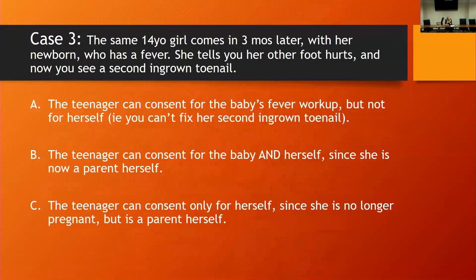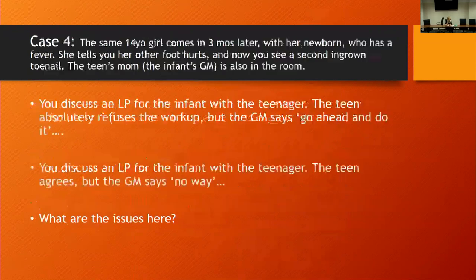Years ago they used to say if you were pregnant or had a baby, you were emancipated. You were no longer emancipated just because you've given birth. But if you're living by yourself with your boyfriend, not necessarily married, and you're financially independent, then you are an emancipated minor and you can decide for yourself.